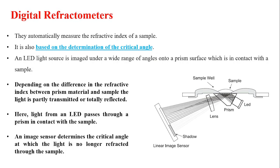Depending on the difference in the refractive index between prism material and sample, light is partially transmitted or totally reflected. Here light from an LED passes through the prism in contact with the sample. An image sensor is also present here. It determines the critical angle at which the light is no longer refracted through the sample. There is a ray diagram shown here.